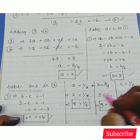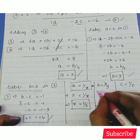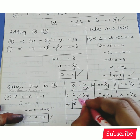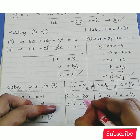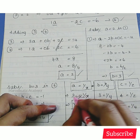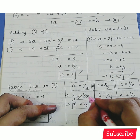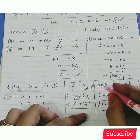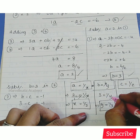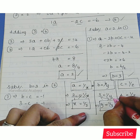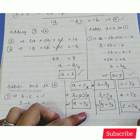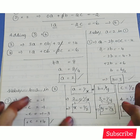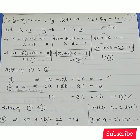Since 1 by x equals a, 1 by y equals b, and 1 by z equals c: with a equals 2, cross-multiplying gives x equals 1 by 2. With b equals 3, y equals 1 by 3. With c equals 4, z equals 1 by 4. These are the final answers for the second problem.